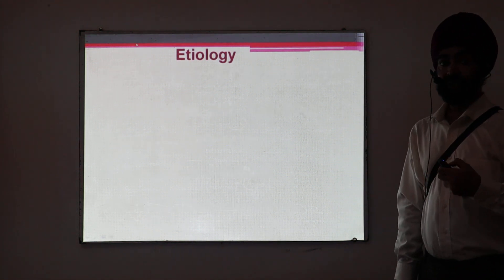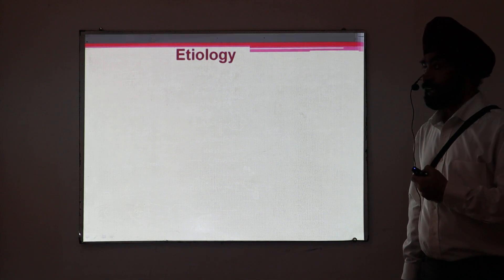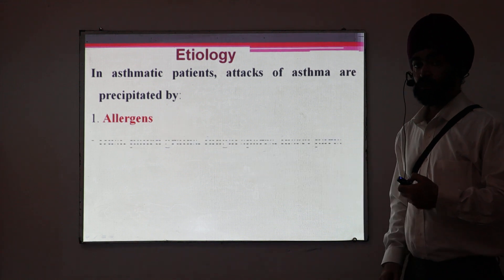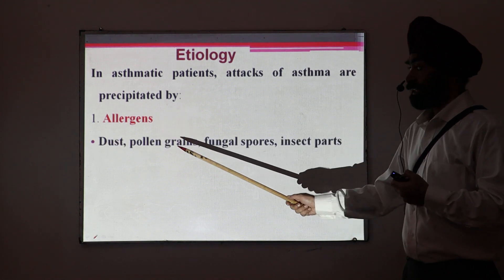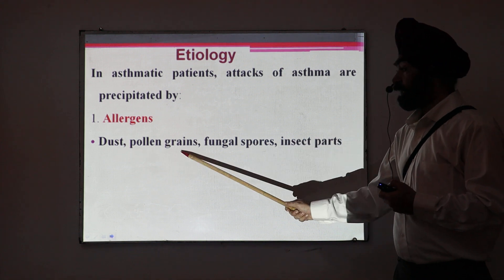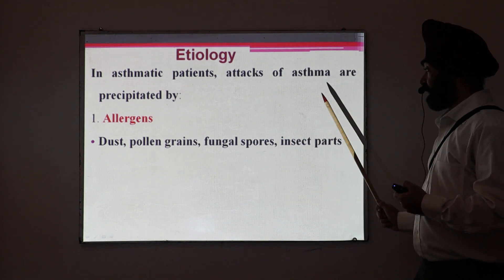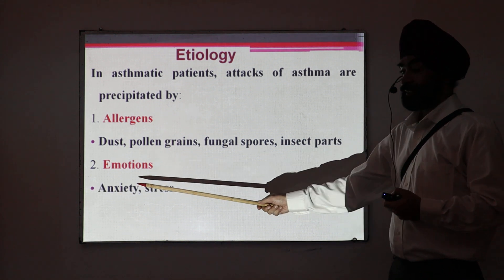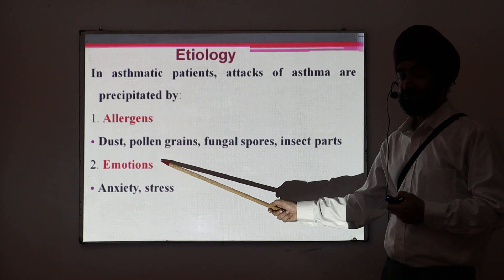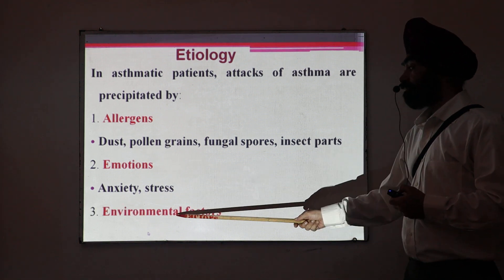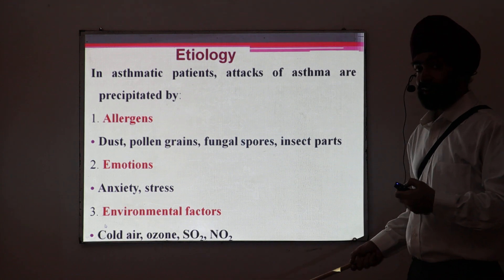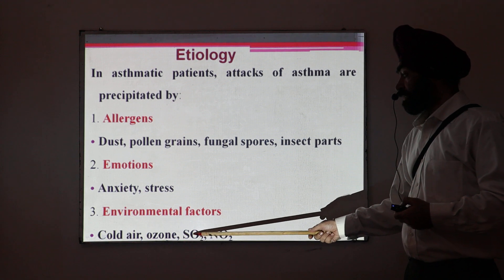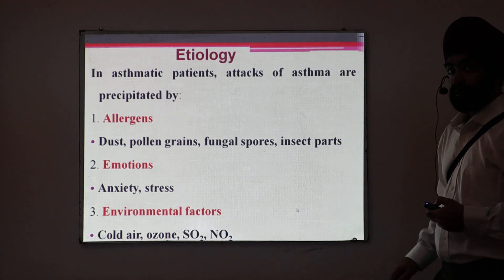Coming to the etiology — what are the things that may lead to asthma. The most important is allergens; there is a long list, including dust, pollen grains, fungal spores, and insect parts. Then emotions, like anxiety and stress, are also important factors in precipitating asthma. Then environmental factors like environmental pollutants — cold air, ozone, carbon dioxide, sulfur dioxide, nitrogen dioxide — are other important factors.